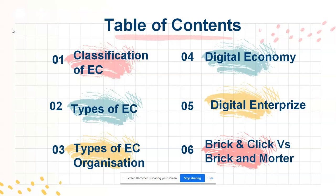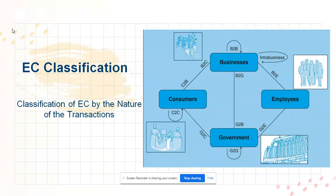The classification of e-commerce is done as per the nature of the transaction. There are four main entities: consumers, businesses, employees, and government. All four entities use e-commerce, and depending on the nature of the transaction executed by these entities, the classification of e-commerce is made.